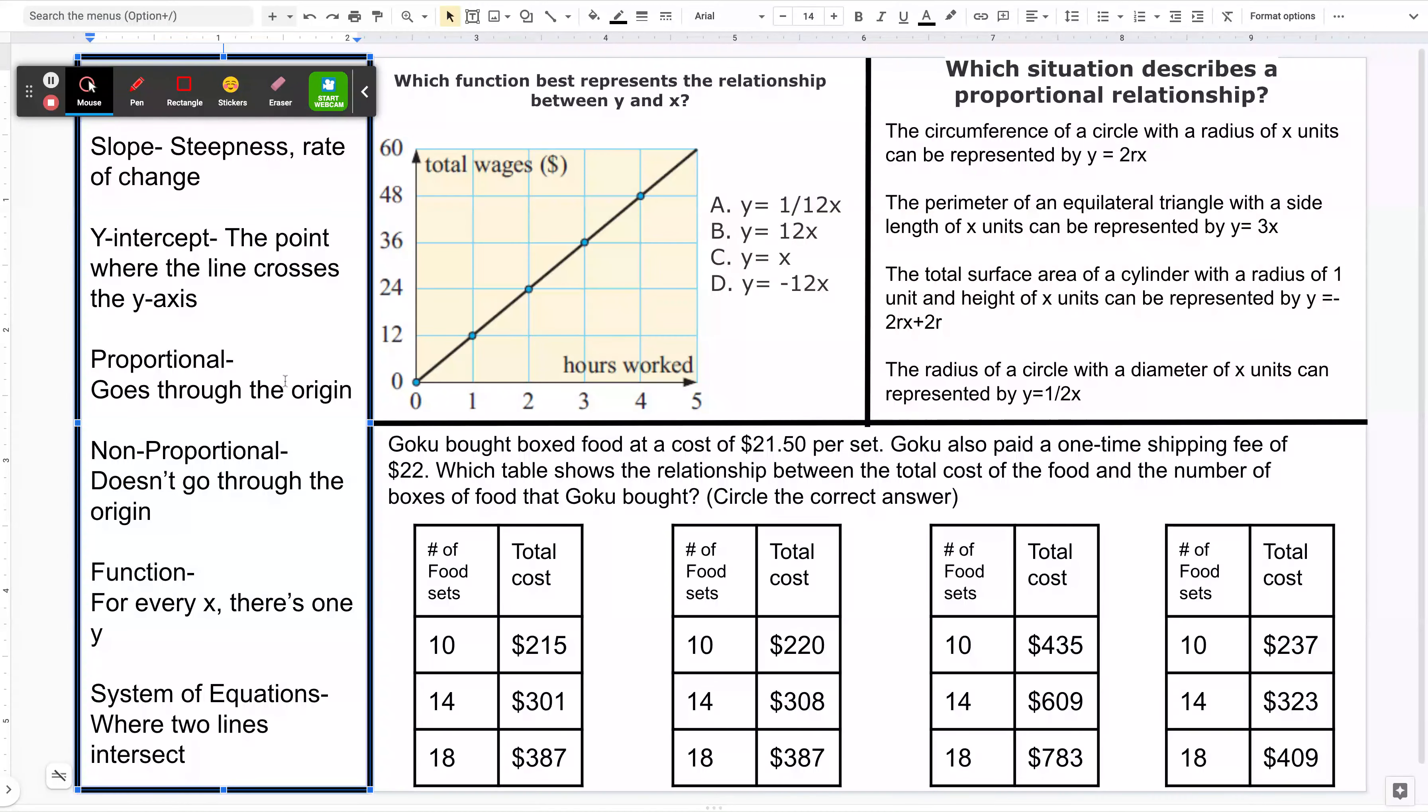So notice, proportional is when it goes through the origin. Non-proportional, it doesn't go through the origin. But those are talking about one line. Systems of equations is when two different lines intersect each other.